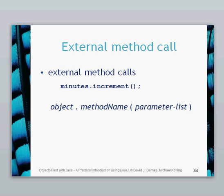The syntax for an external method call looks like this: object dot method name, then the parameters. The increment method doesn't take any parameters, as you can see when you right click on the NumberDisplay object. The parameter list is not required in this particular instance.